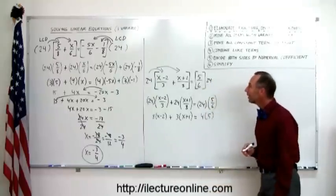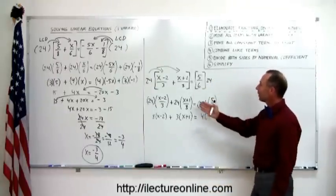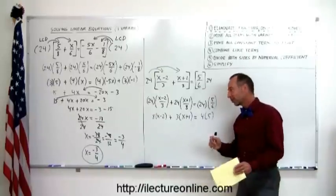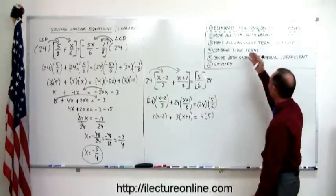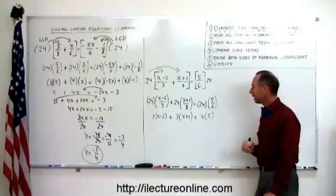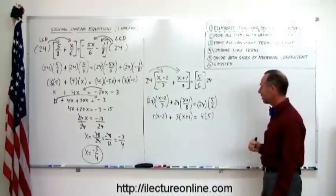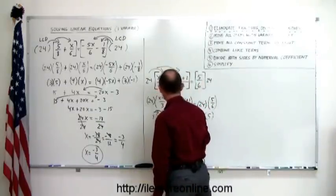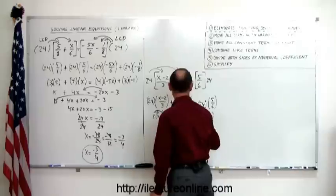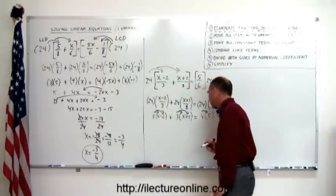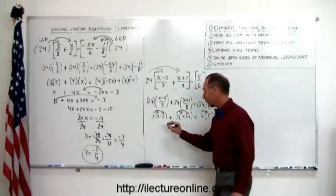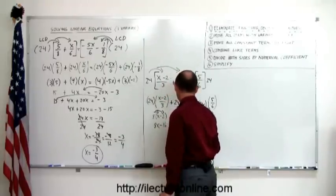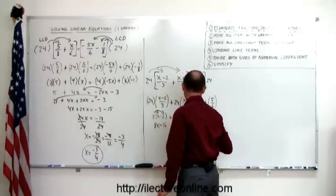We've now turned the equation from something with fractions into an equation with parentheses. We go ahead and simplify by eliminating the parentheses — distributing the 8 over x and minus 2, distributing the 3, and distributing the 4. That gives us 8x minus 16 plus 3x plus 3 equals 20.